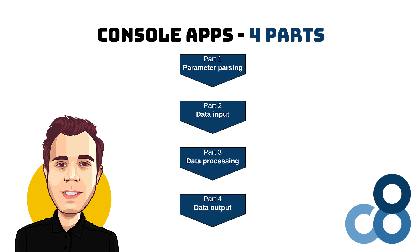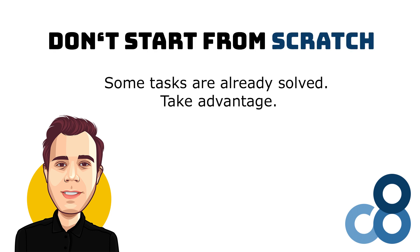Last but not least, the data output. After the operation has completed, the console app usually gives some feedback. In the simplest case, the console app returns an integer after the executing process finished. A better experience is providing information in the output, such as log information or writing output data to the console. How to approach writing a console application?